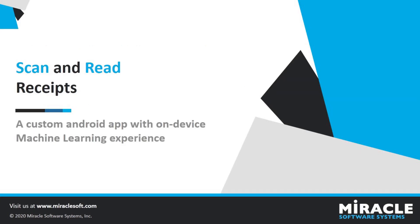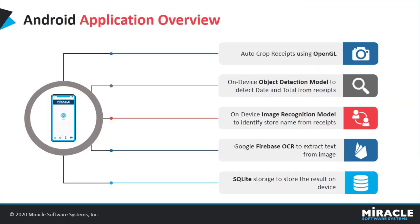Now we'll be seeing a custom Android app with an on-device machine learning experience. Our Android application has all the latest features to make the app look not only interesting, but also very hands-on due to its seamless integration with ML models. It has auto-crop functionality for receipts using OpenGL. A TensorFlow object detection ML model is used to detect the date and total from a receipt. The location detected by this model is fed to Firebase OCR, which extracts text from it. To recognize the store name of the receipt and to identify the category, an image recognition ML model is used. All this information never leaves the device and is stored offline locally in an SQLite database for the user for future reference.